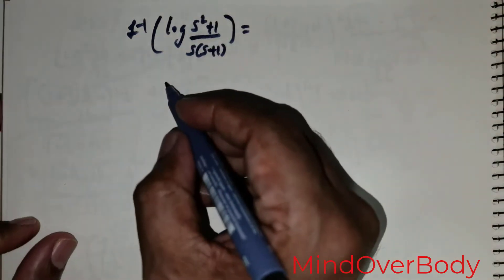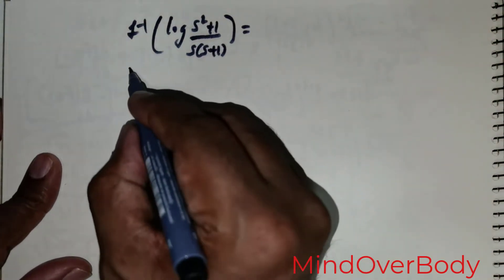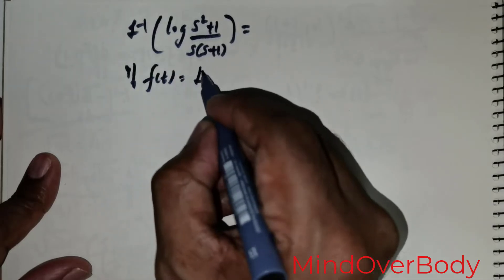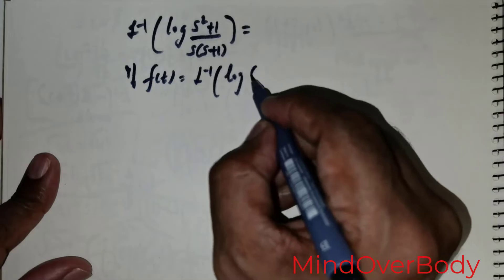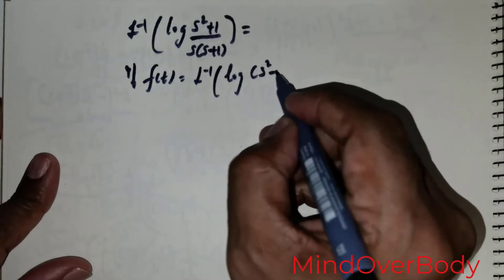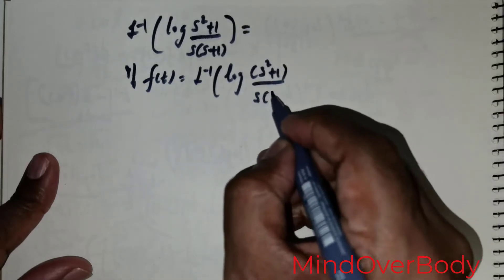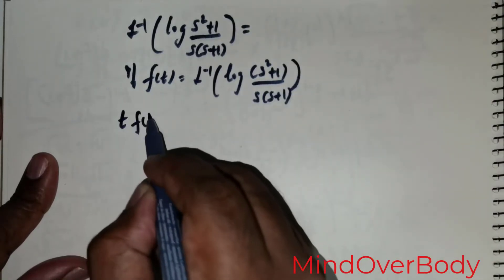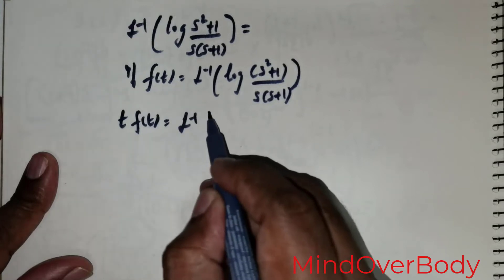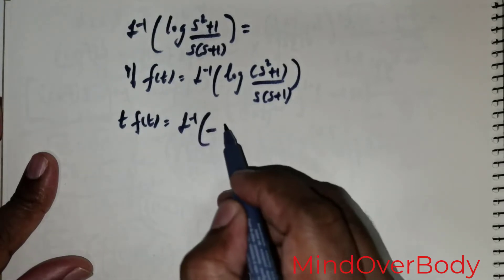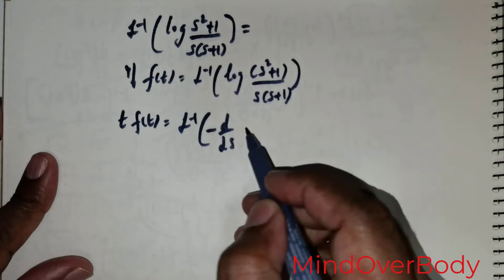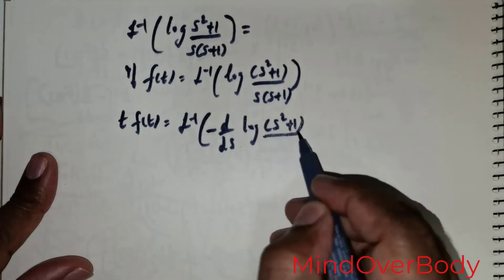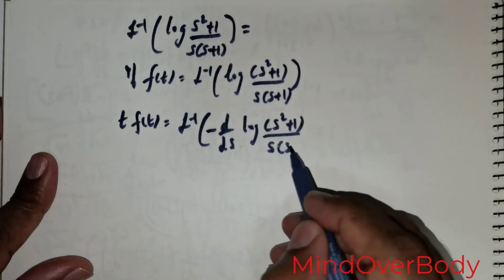So what I wish to do is start off like this. If f of t is equal to L inverse of log of s squared plus 1 divided by s into s plus 1, then t times f of t is equal to L inverse of negative d over ds of log of s squared plus 1 divided by s into s plus 1.